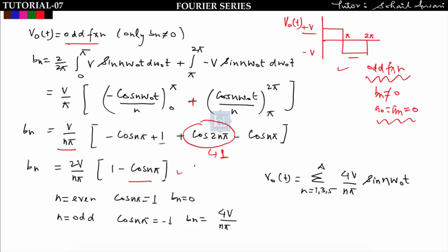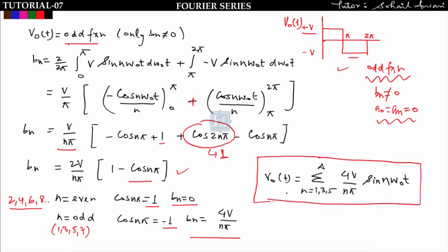Now consider two cases. When n is even (n = 2, 4, 6, 8...), cos(nπ) = 1, so b_n = 0 — even harmonics vanish. When n is odd (n = 1, 3, 5, 7...), cos(nπ) = −1, giving b_n = 4V/(nπ). So only odd harmonics exist, and v_naught(t) = summation over n = 1, 3, 5... of [4V/(nπ)] sin(n·ω₀·t).